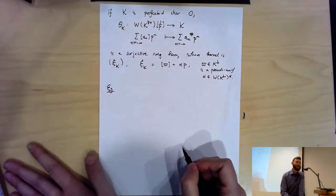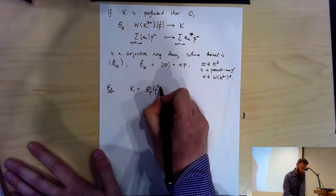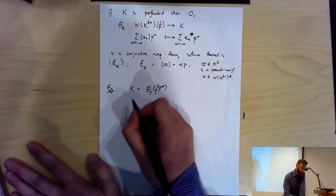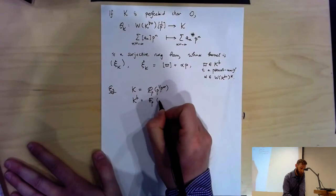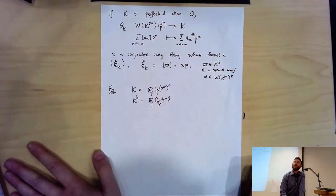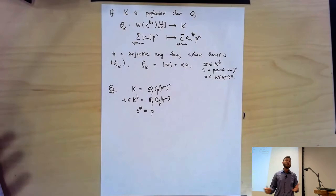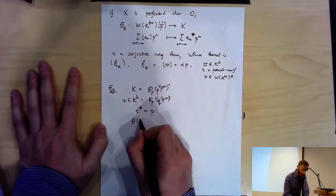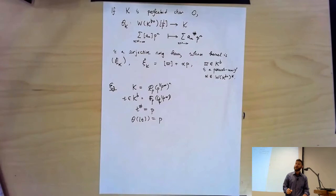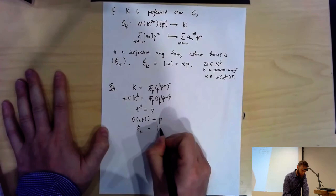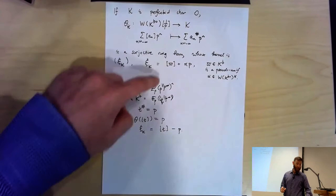Let's do an example. For K = Q_P(P^{1/P^∞})^∧, we said the tilt is the Laurent series field with parameter T, where T is the sequence of P-power roots of P, so T-sharp = P. To find an element in the kernel of θ_K: since θ_K([T]) = T-sharp = P, we look for something that maps to zero. Easy: [T] - P is in the kernel. And [T] - P is of the required form — T is a pseudo-uniformizer and -1 is a unit.